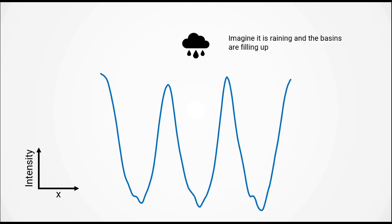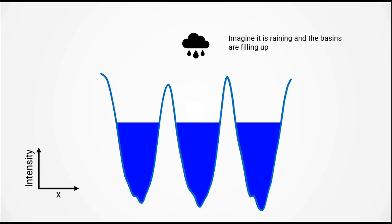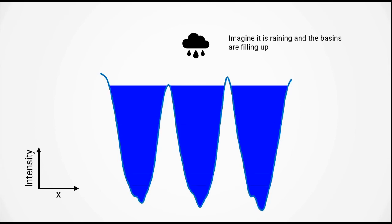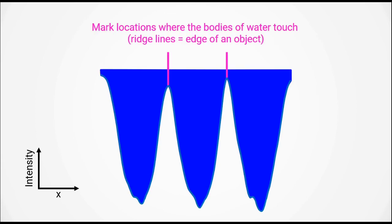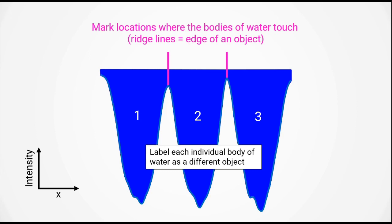Now imagine that it is raining. The basins would collect water and start to fill up. Eventually two neighboring bodies of water would touch. The point of contact is marked as the ridge line. This ridge line is used to separate the objects, essentially marking the edges. Each individual body of water is then labeled as a different object.